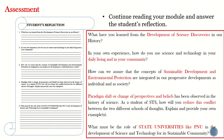For assessment, at the end of every module there is a reflection journal. Questions include: how are concepts of sustainable development and environment protection integrated in our progressive development as individuals and as society? Given that paradigm shifts have been observed in the history of science, as a student of STS, how will you reduce the conflict between two different schools of thought? Provide your own example, and explain what must be the role of universities in the development of science and technology for a sustainable community.